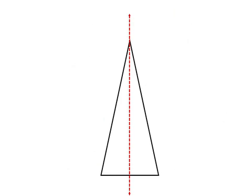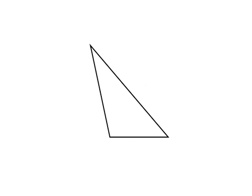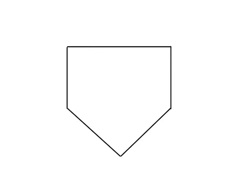Here's an isosceles triangle — it just has one line of symmetry. Here's a scalene triangle, meaning all three sides have different lengths — there are no lines of symmetry in a scalene triangle. Here's a pentagon shaped like home plate in baseball or softball. It has just one line of symmetry. It's not the same as a regular pentagon because all sides are not the same length and all angles are not the same measure, but it does have one line of symmetry.